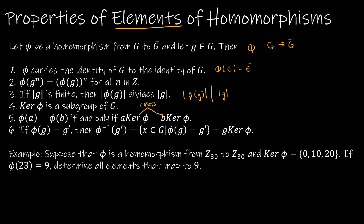This last property says: if phi(g) = g prime, then the pre-image phi⁻¹(g prime) equals g times the kernel of phi. That may be hard to picture, so let's look at an example using this property.